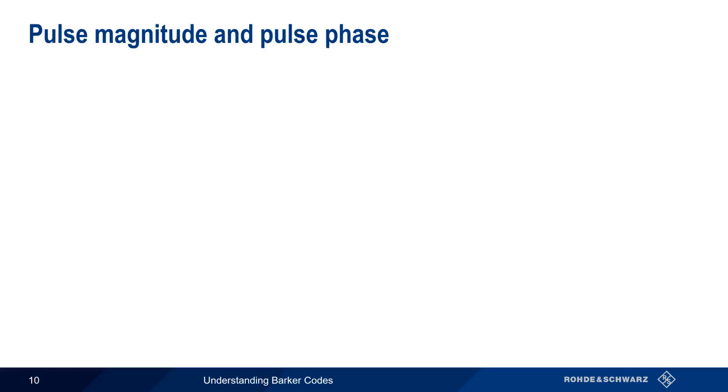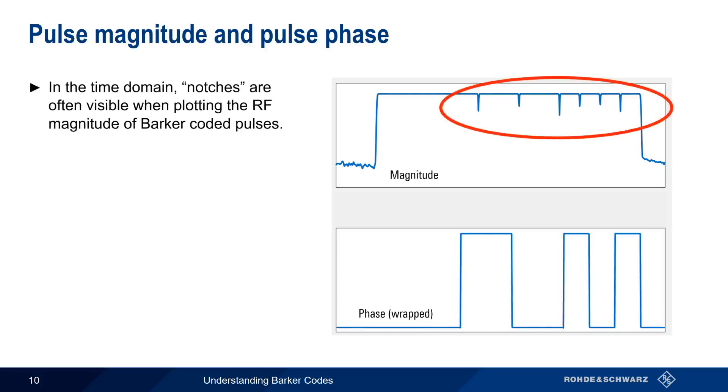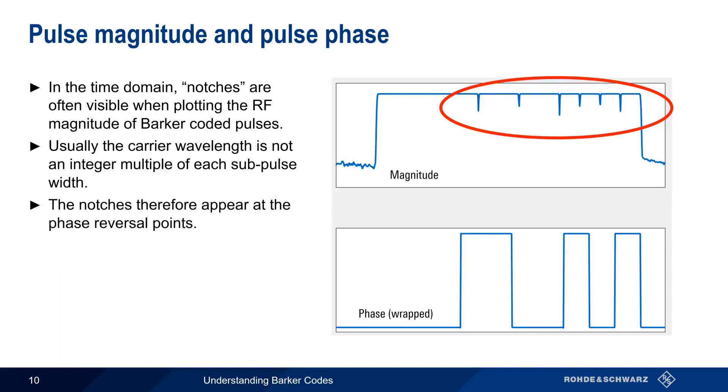When looking at Barker coded pulses in the time domain, you'll often notice small notches in the RF magnitude. This is because the RF carrier wavelength is usually not an integer multiple of the sub-pulse width. Therefore, we see notches at the phase reversal points. The Barker 13 coded pulse shown here has six notches in the pulse magnitude, and each one of these notches corresponds to the six phase reversals in the code.